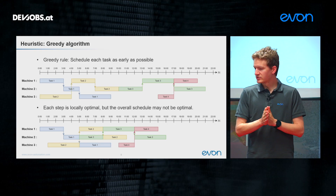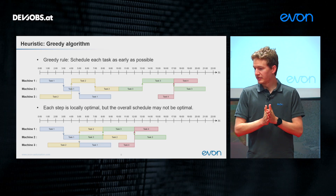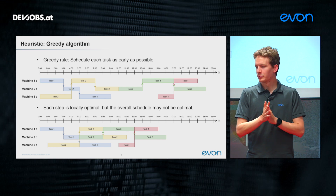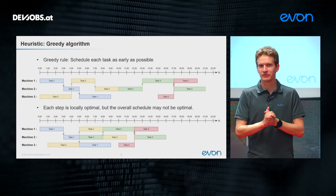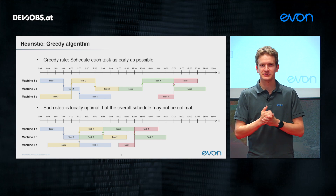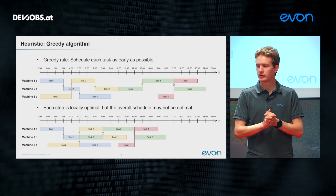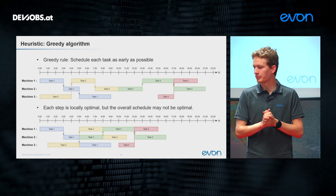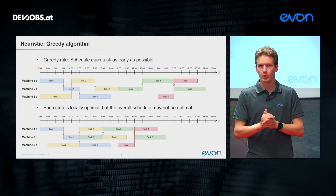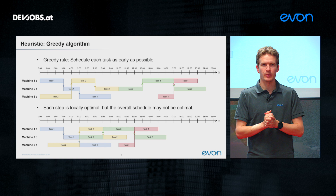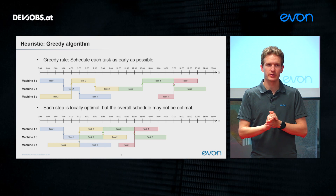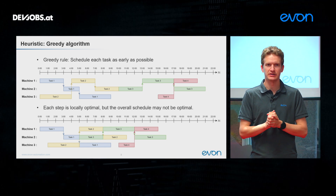This example shows how much impact a small change in one task's scheduling can have on the total schedule. If you tried the puzzle, I hope you came up with this 16-hour schedule — it is indeed the optimal one. With that, I want to conclude my talk. Thank you very much for your attention.